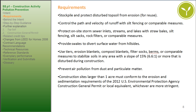Requirements: Stockpile and protect disturbed topsoil from erosion for reuse. Control the path and velocity of runoff with silt fencing or comparable measures. Protect on-site storm sewer inlets, streams, and lakes with straw bales, silt fencing, silt socks, rock filters, or comparable measures. Provide swales to divert surface water from hillsides. Use tears, erosion blankets, compost blankets, filter socks, or berms to stabilize soil in any area with a slope of 15% or 6.6-to-1 ratio or more that is disturbed during construction.